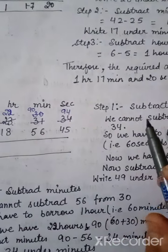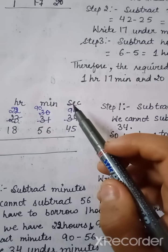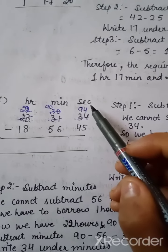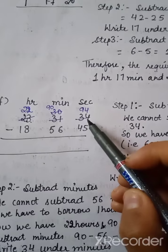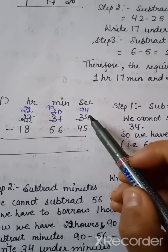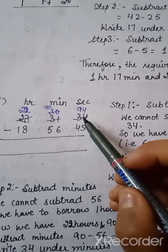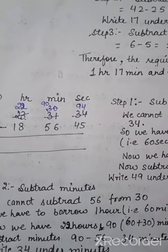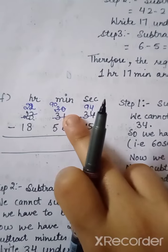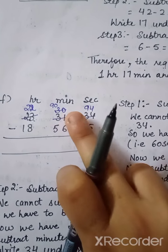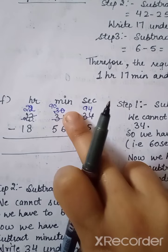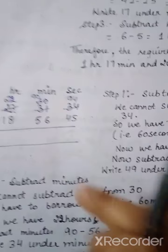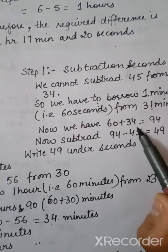Now let us do Part F. As you know, we start from the right-hand side and go towards the left — seconds column first. Can we subtract 45 from 34? No, for subtraction we need a higher number on top. So we have to convert 34 into a higher number. We take one minute from the minutes column. One minute equals 60 seconds, so we add 60 plus 34.